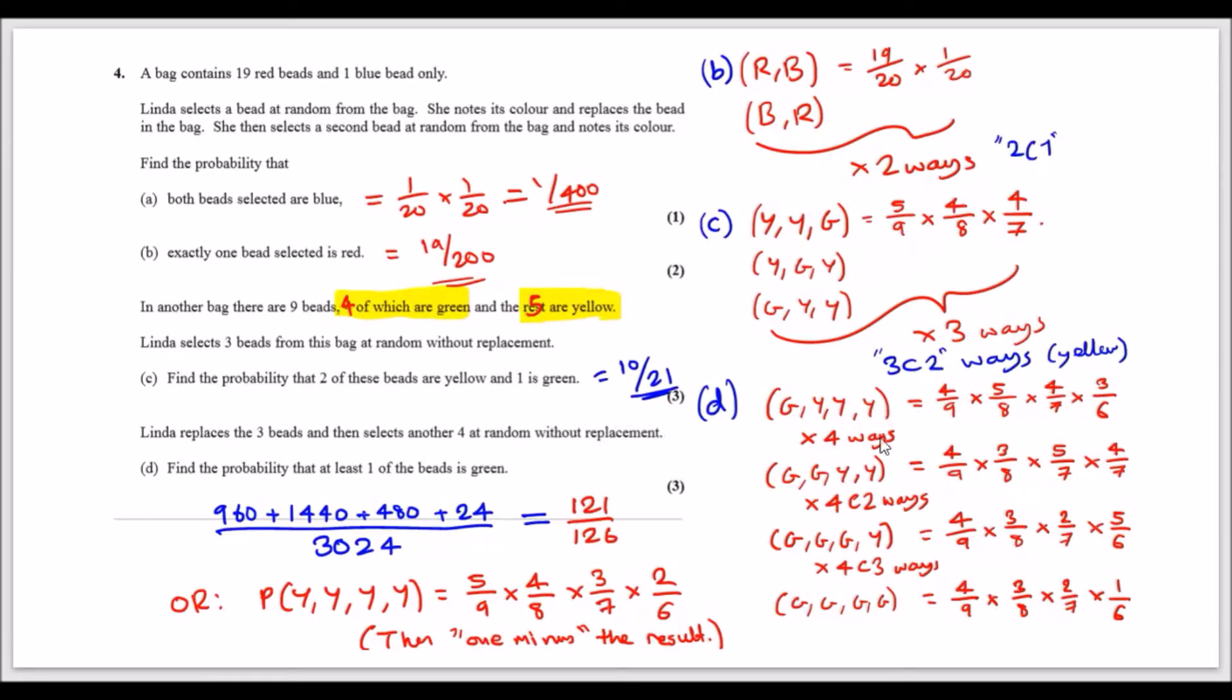Find the probability that at least one of the beads is green. What this means is at least one green means you could either have one green or more. So you could have one green, or two greens, or three greens, or all greens.